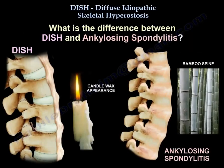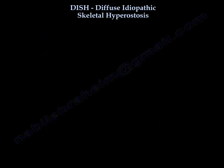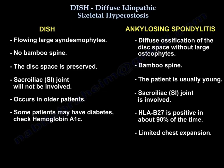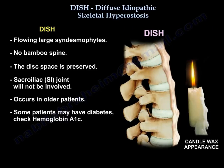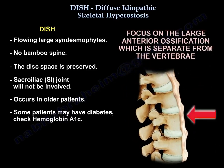What is the difference between DISH and ankylosing spondylitis? Comparing the two using this table: In DISH, there are flowing large syndesmophytes, there is no bamboo spine, the disc space is preserved, there is no involvement of the SI joint, and it occurs in older patients. Some of these patients may have diabetes and hemoglobin A1C will be elevated. The key feature is large anterior ossification separate from the vertebrae.